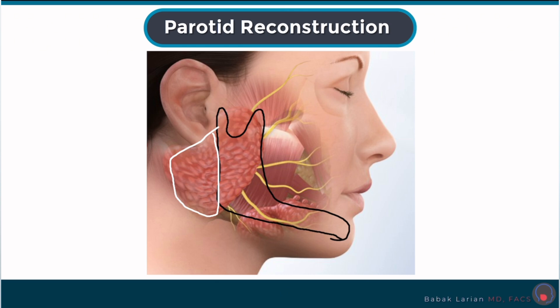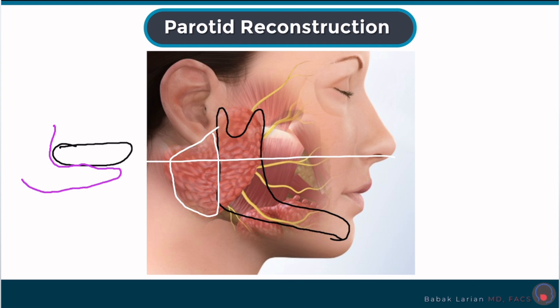So if you were to do a cross-section like this, you would see the jaw as — this is the jawbone — and the parotid would be something like this. So this area is thickest, and then as you come over the jaw, it gets thinner, and as you go forward, it gets even thinner.